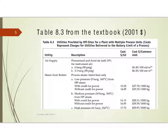You don't want particles and grit to get inside the system for pneumatic controls. For steam, we control the temperature generally by controlling the pressure. They have pricing for low pressure, medium pressure, and high pressure, and these are priced both as dollars per gigajoule of heat or dollars per thousand kilograms of steam.